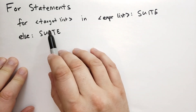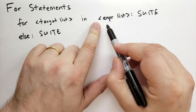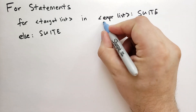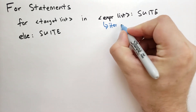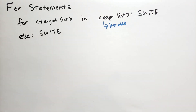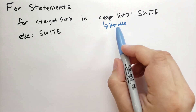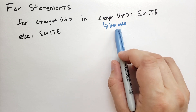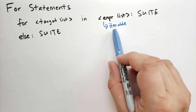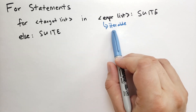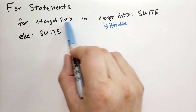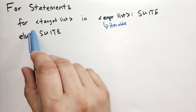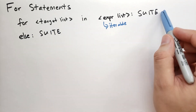When Python executes the for statement, it first evaluates the expression list, which is supposed to return some sort of iterable. Next it changes that iterable into an iterator using the iter function. Then for each item in that iterator, it will assign the target list to the value, and then run the suite.